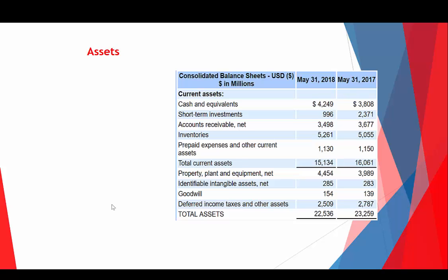This is just a snapshot of the balance sheet focused in on just the asset section. You can see some examples: cash, short-term investments, accounts receivable — that's when they make a sale to a department store and they're waiting for that department store to pay them. We're going to define an asset as any economic resource that will provide future benefits to a business.